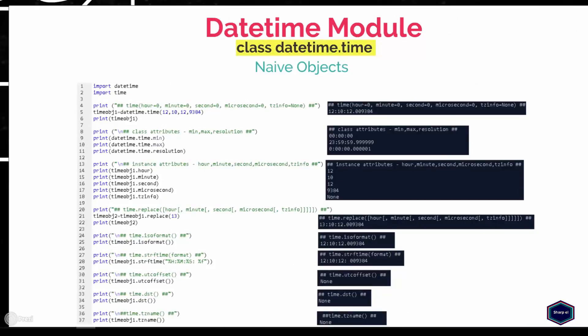Now let's look at the next class: time. An instance of class time represents a time, and as mentioned before, a time object can be naive or aware. The constructor of the time class takes five optional arguments: hour, minute, second, microsecond, and tzinfo. In this example, I have created a naive instance of time class because the tzinfo attribute is set to None. To create an aware time object, you have to set the tzinfo attribute to an instance of a subclass of tzinfo class, which can be the timezone class.